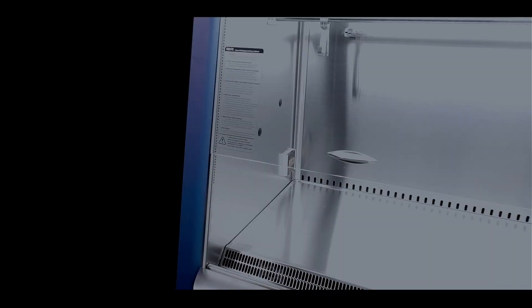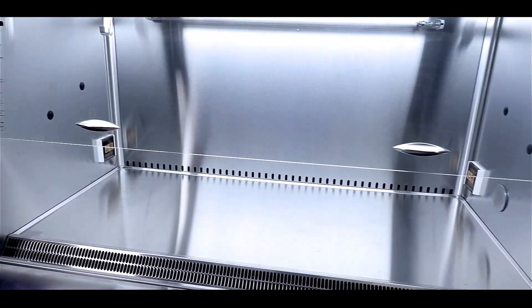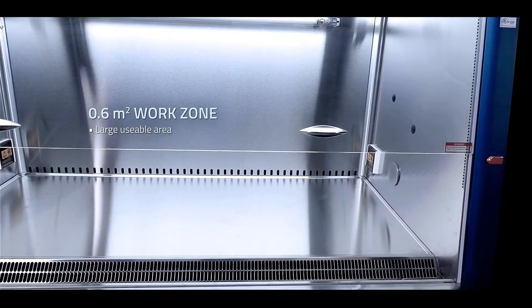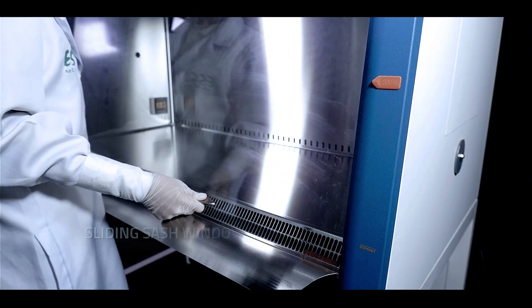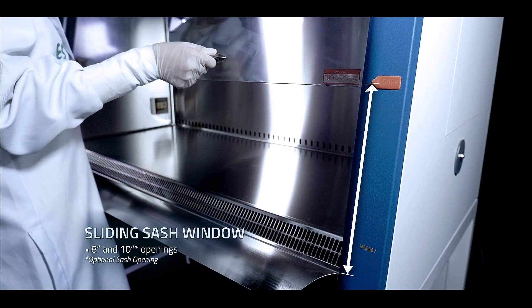The AC2NS G4 boasts a spacious usable area spanning 0.6 square meters. Choose from two sliding sash window models: 8 and 10-inch openings.